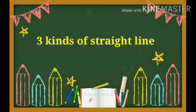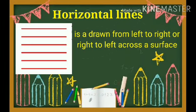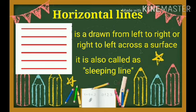There's three kinds of straight line. First is horizontal line. Horizontal line is drawn from left to right or right to left across the surface and it is also called a sleeping line.